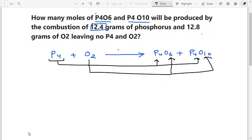12.4 grams of phosphorus means 12.4 divided by 124 moles, because the molecular weight of P4 is 124. And the molecular weight of oxygen is 32, so this is 12.8 divided by 32 moles.